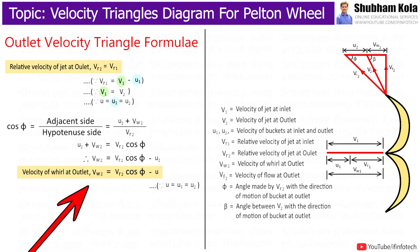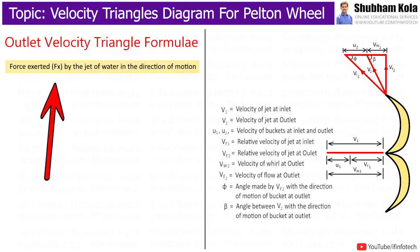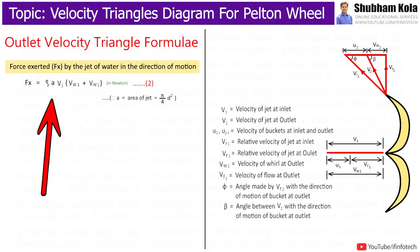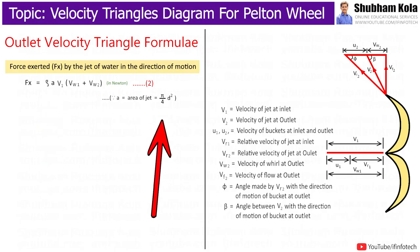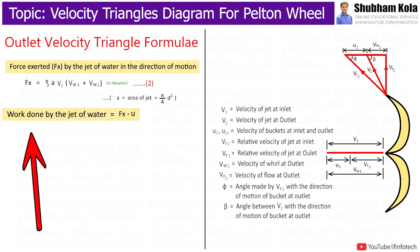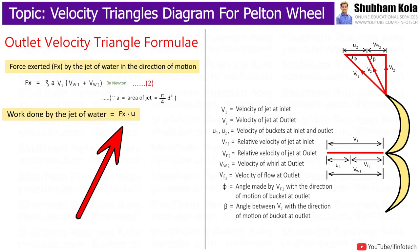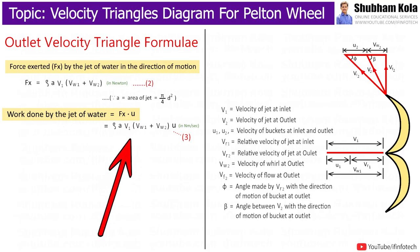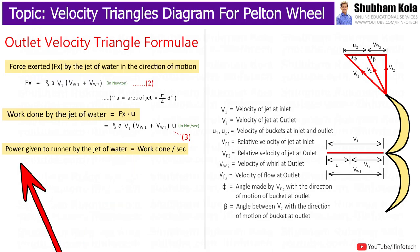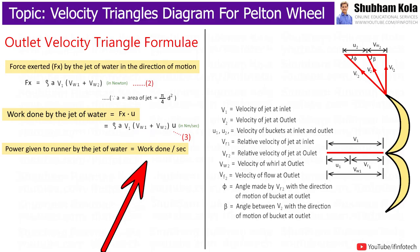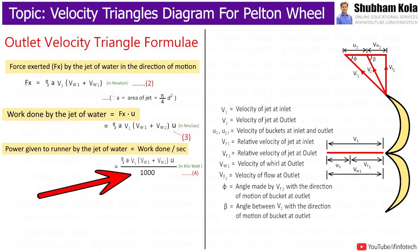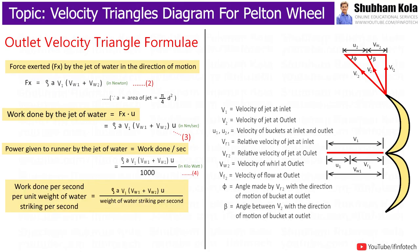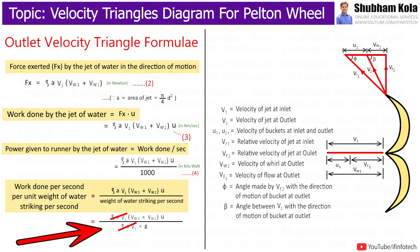We keep this value aside for use in the work done calculation. The force exerted by the jet of water in the direction of motion is given by Fx = ρaV1(Vw1 + Vw2), where 'a' is the area of the jet = (π/4)d². Work done = Fx × U. Power given to the runner equals work done per second, divided by 1000 to get kilowatts. Work done per unit weight of water striking per second is obtained by dividing by ρaV1g, which gives Equation 5.